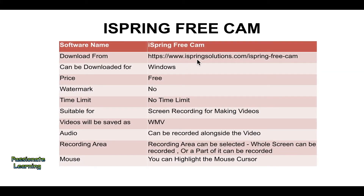Coming to the third free screen recording software — it is iSpring Freecam. You can download it from iSpringSolutions.com for Windows. The price is free, there is no watermark during recordings, and there is no time limit — videos can be recorded as long as you want. Output videos will be saved as WMV. Audio can be recorded alongside the video. The recording area can be selected — the whole screen or a part of it. An additional feature is that you can highlight the mouse cursor so it looks good on the screen.